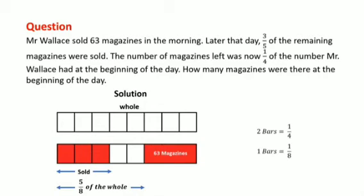Remember, each of the small red bars represents one-eighth. This implies that three-eighths of the magazines are represented as 63 magazines.